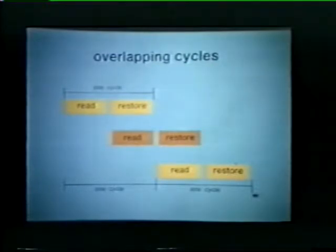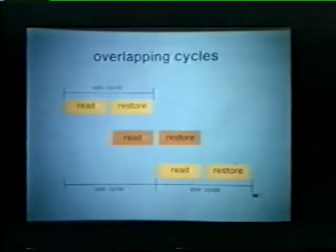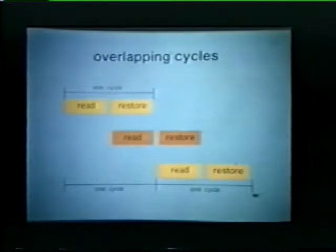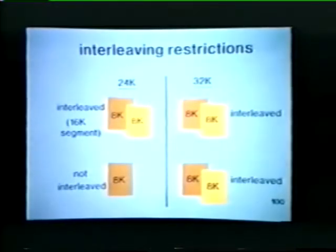Memory interleaving permits us to overlap core memory read and restore cycles. By overlapping these cycles we can reduce program execution time significantly. For example, one memory bank can be performing its read operation while the other interleaved memory bank is completing its restore operation. In this example, three interleaved memory cycles can be performed in the time that it normally takes for just two memory cycles.